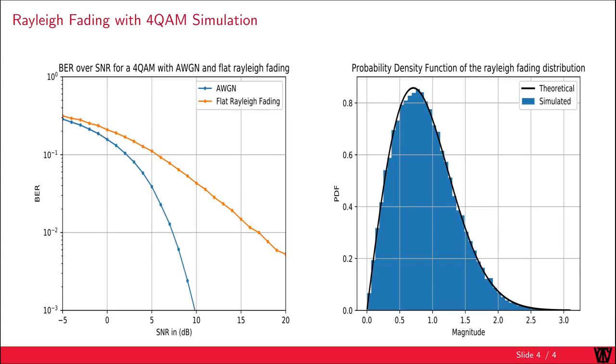Here we can see the behavior of a 4QAM system including additive white Gaussian noise with and without Rayleigh fading. As you can see on the figure on the left, the additional fading does have a negative impact on the bit error rate. On the right, you can see a figure of the probability density function and a histogram of the simulated channel realizations.